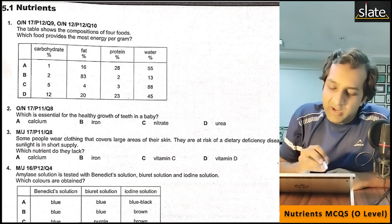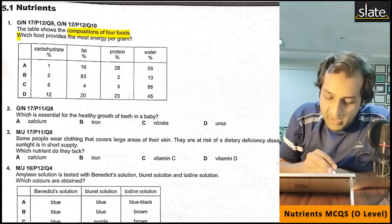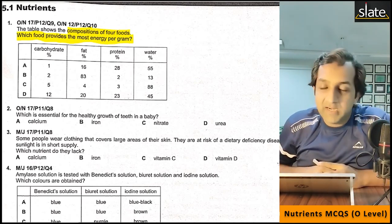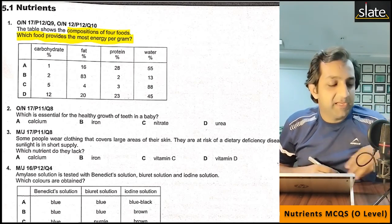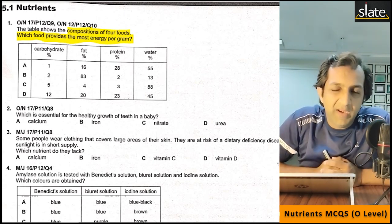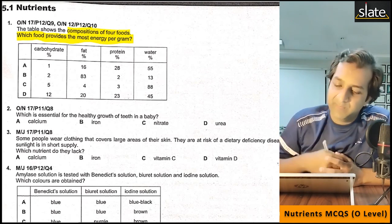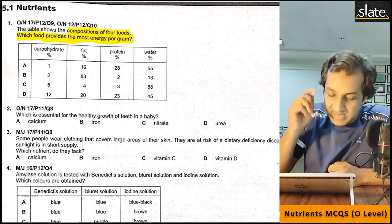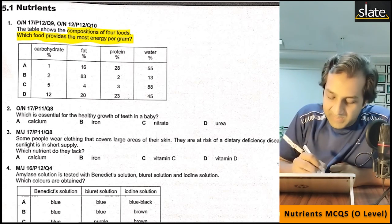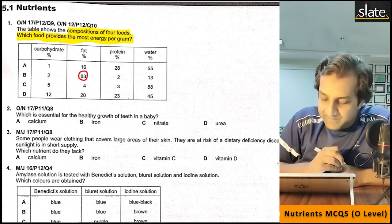The table shows the composition of 4 types of food. Which food provides the most energy per gram? Remember, fat provides 3 times more energy. So we look at where fat is highest — here it is 83%.